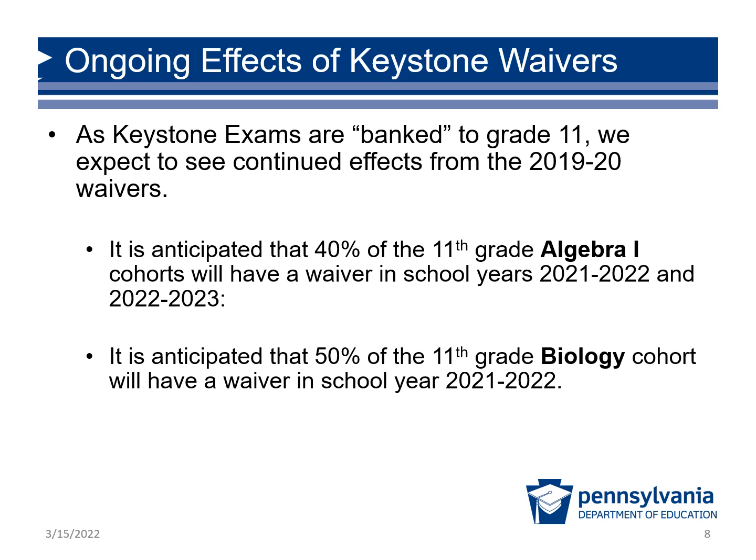These changes in scores are clearly more correlated to participation than to performance. As we've described throughout this presentation, we expect to see continued effects from the banked 2019-20 Act 136 waivers. It's anticipated that 40% of the 11th grade Algebra 1 cohorts will have a waiver in school years 2021-22 and 22-23, and those students will be exempted from those reporting calculations. It's also anticipated that 50% of the 11th grade Biology cohort will have a waiver in school year 2021-22. In any year, multiple data points such as participation and attendance rates, academic growth data, and local assessment data should be considered simultaneously when analyzing student performance.